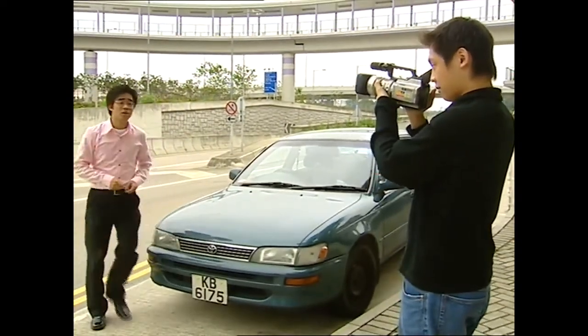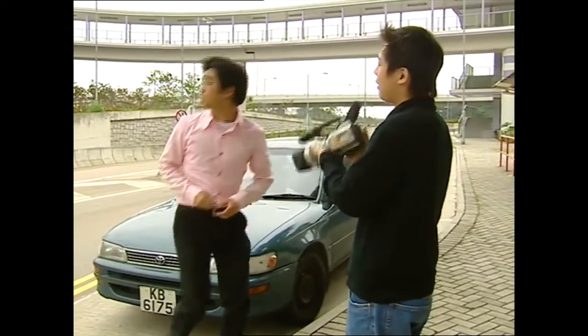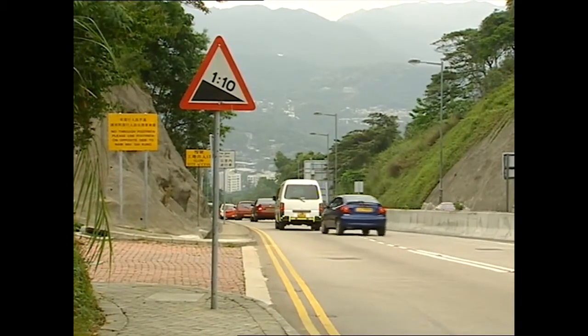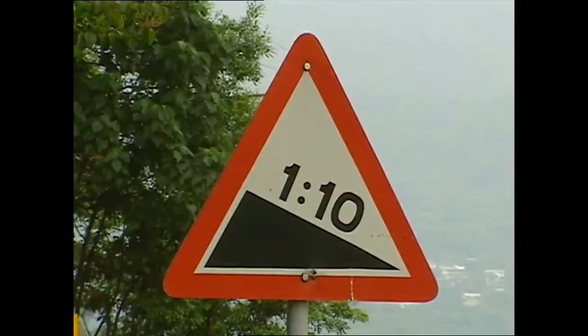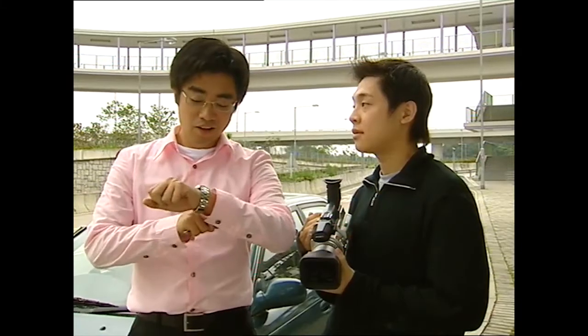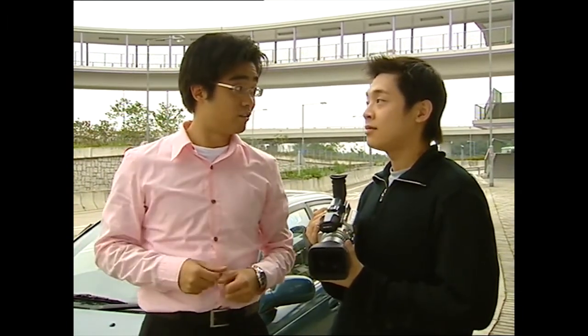Now that we're out of the city, why don't we have a rest here? Hey Ringo, there's a road sign with a one and a ten on it — what does it mean? That sign is used to show the gradient of the road. The one and the ten mean that when the horizontal distance between two points on the road is ten units, the vertical distance is one unit.